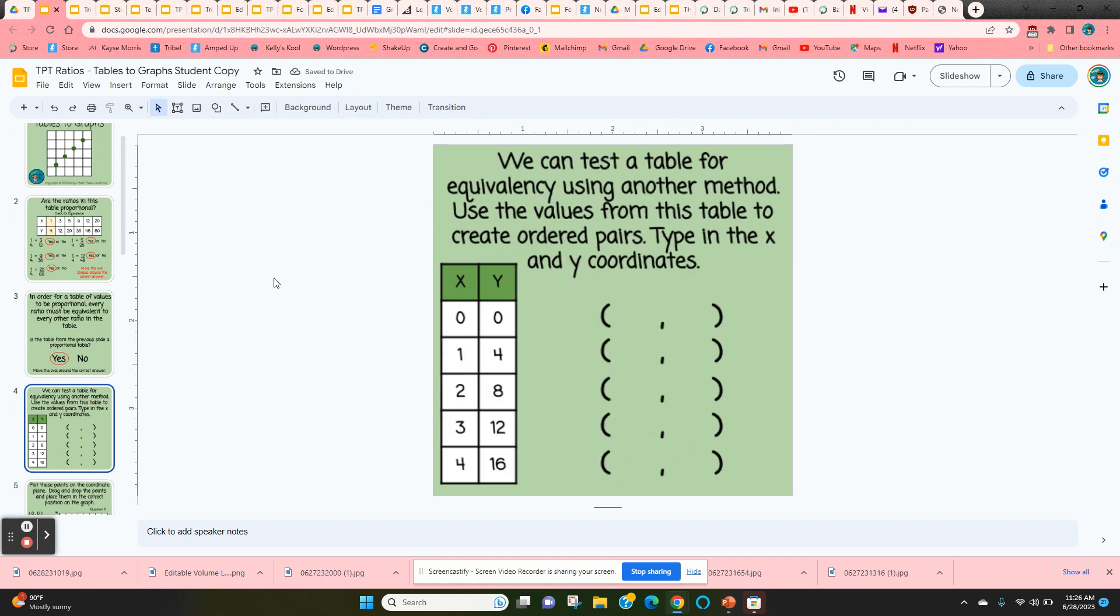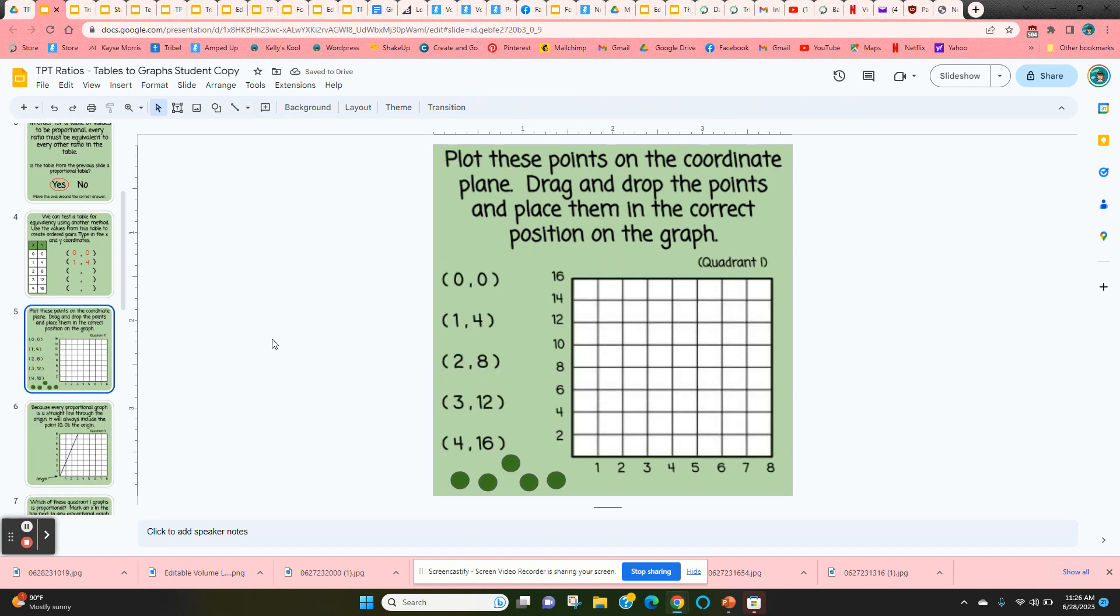When they get to slide 4, it shows a different way to check a table for equivalency. We're going to take the values from the table and create ordered pairs that we can graph. So students are just going to take the ordered pairs from the table, pretty simple. It's 0, 0, 1, 4, 2, 8, and so on.